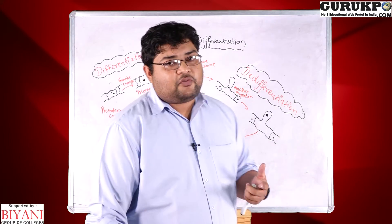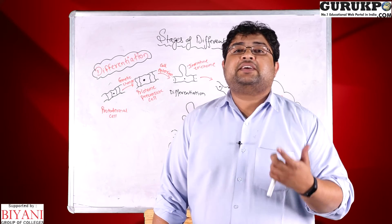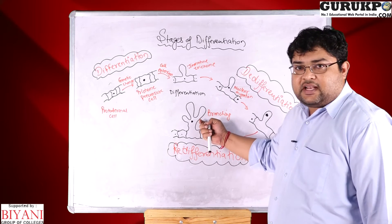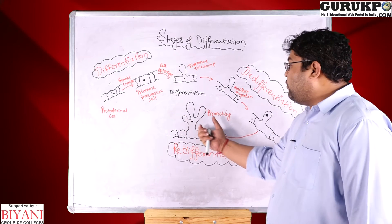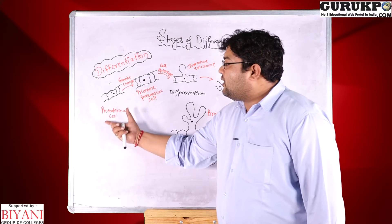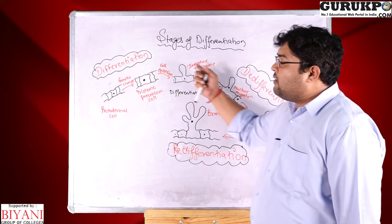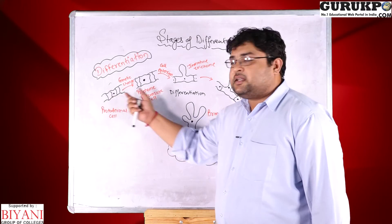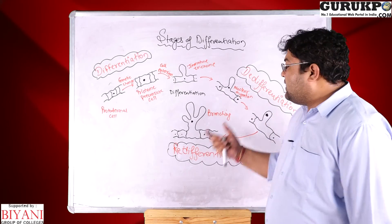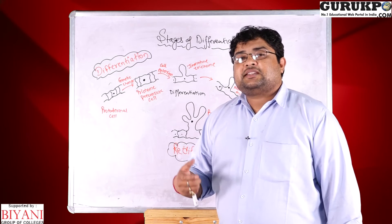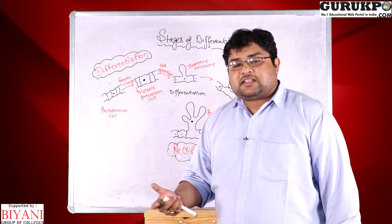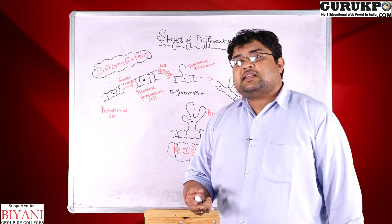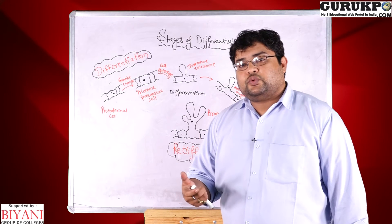Now, what is de-differentiation? As the term says, 'de' is prefixed here, meaning just the opposite of differentiation. That means how a specific cell — for example a mature trichome cell — becomes de-differentiated and forms a normal cell. When this opposite process takes place and a fully developed cell is converted into a normal cell, that is called de-differentiation. De-differentiation is one of the major stages of plant tissue culture, where generally hormone concentrations are provided to a specific cell type so that it can go back to its dividing capacity and form certain types of cells. This is highly important for developing transgenic plants.